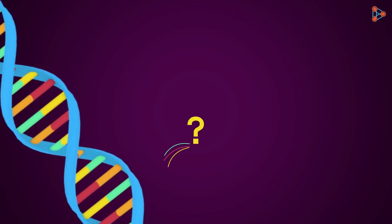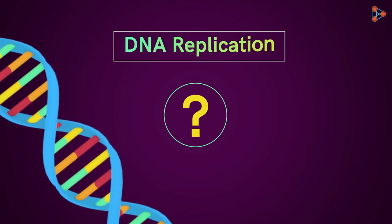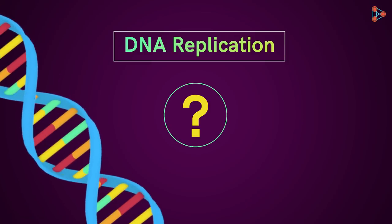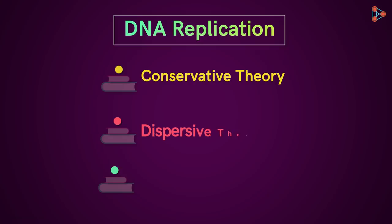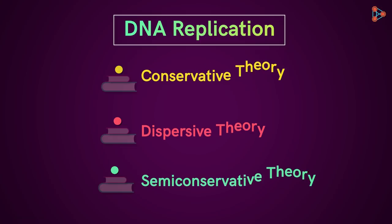Now tell me, how is this complex looking DNA molecule replicated? We had seen that there were three theories put forth to understand the DNA replication process: the conservative, dispersive, and semi-conservative theory. But which amongst the three is the correct one? Let's understand this in the upcoming parts.